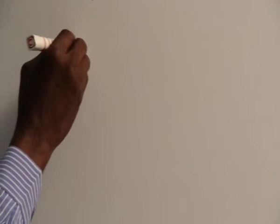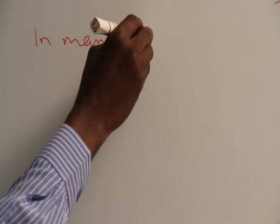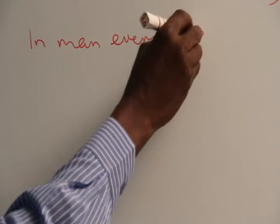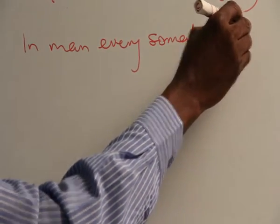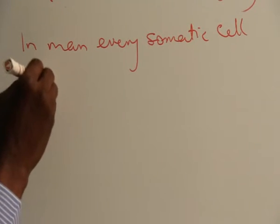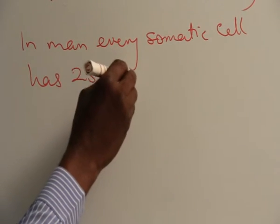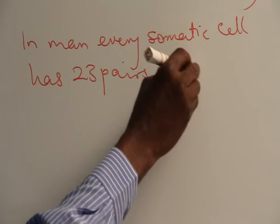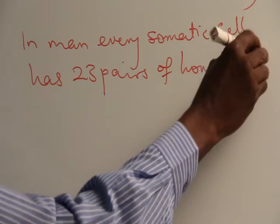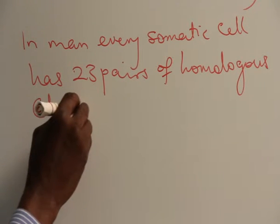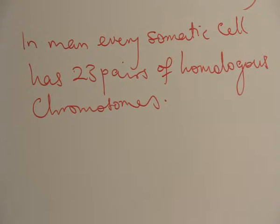A man, every somatic cell, has 23 pairs of homologous chromosomes. How come about this?